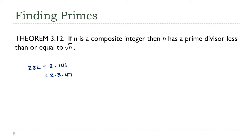A question I often get asked is: how do I know when I can stop? Do I really need to check every number between 2 and 281? Or is there an upper limit? Well, yes, there is, and that's what this theorem is telling us.